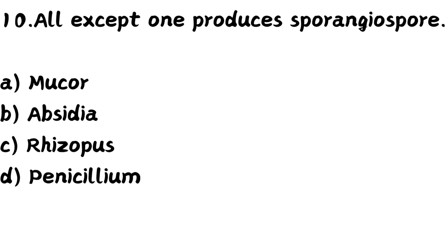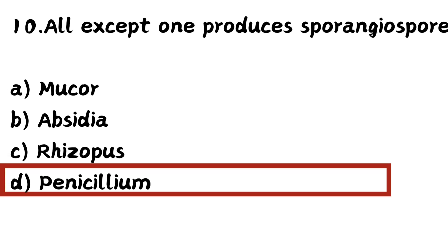Question number ten: All except one produces sporangiospore — Option A: Mucor, Option B: Absidia, Option C: Rhizopus, Option D: Penicillium. Which one does not produce sporangiospore? The right answer is Option D — Penicillium. All the others — Mucor, Absidia, and Rhizopus — can produce sporangiospores.